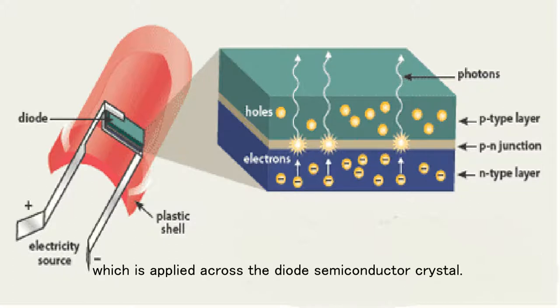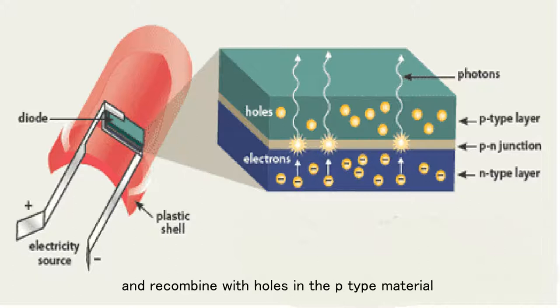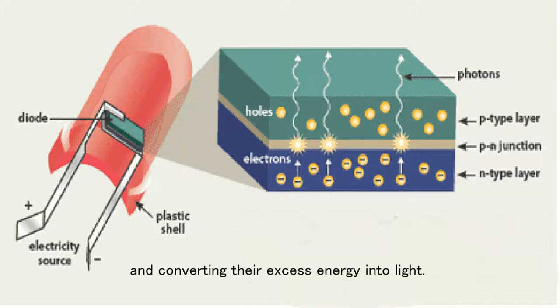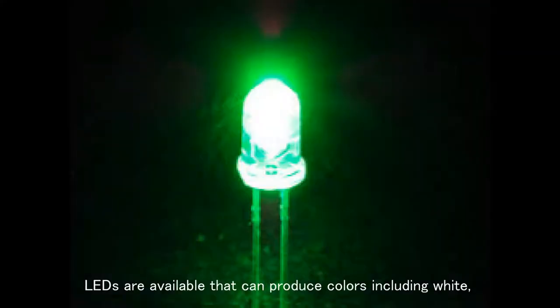voltage which is applied across the semiconductor crystal. This results in the electrons crossing the p-n junction from the n-type material and recombining with holes in the p-type material, converting their excess energy into light. LEDs are available